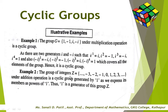Next example: the group of integers Z = {..., -3, -2, -1, 0, 1, 2, 3, ...} under addition is a cyclic group generated by 1. We can express every member as a multiple of 1, thus 1 is a generator of Z.